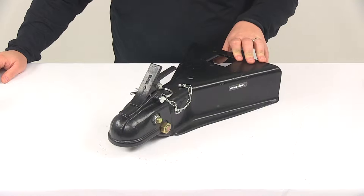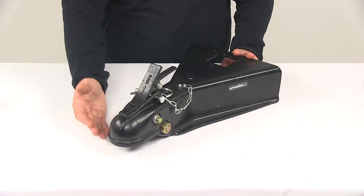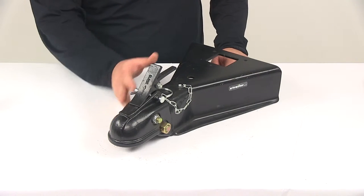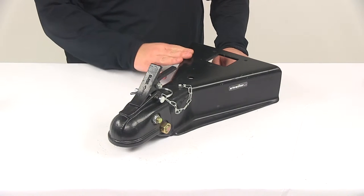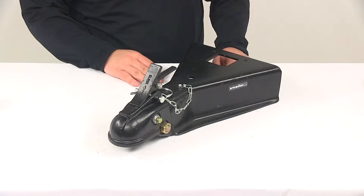It is a weld-on installation. It's going to provide the connection point right here for your hitch ball. It's going to feature a gross weight capacity of 15,000 pounds with a maximum tongue weight capacity of 2,250 pounds.